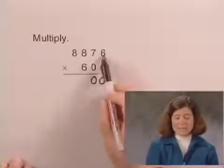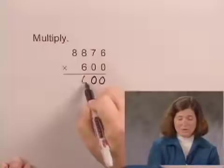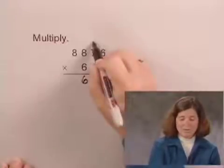Multiplying 6 times 6, we get 36. Writing the 6 here and the 3 above the 7.